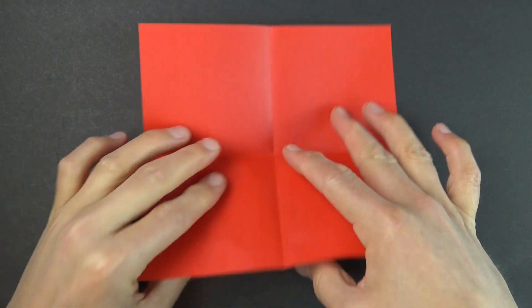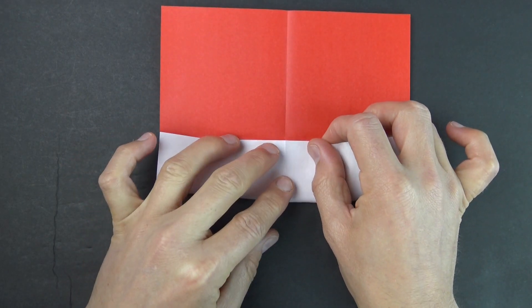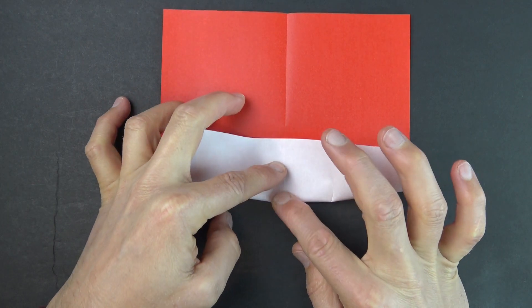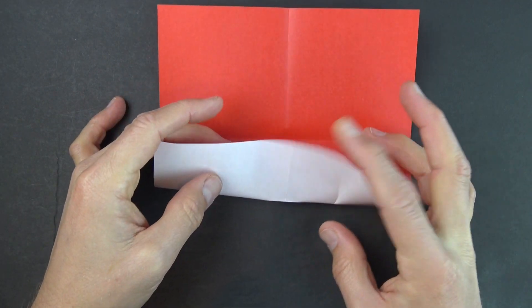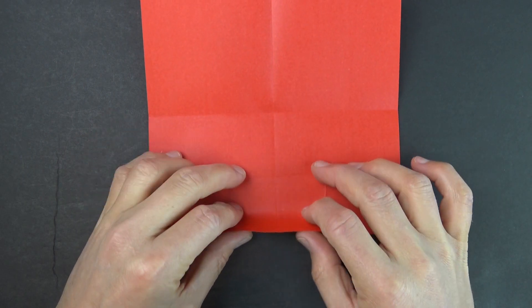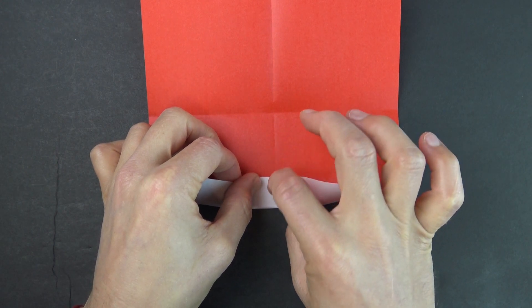Unfold, and now fold this point to the middle. But don't make the whole fold, just pinch right in the middle. Right there, and unfold, and fold this point to the intersection. But don't make the whole fold, just make another pinch. And make it go exactly to the intersection.